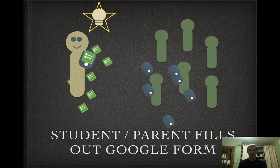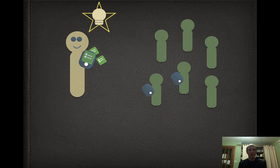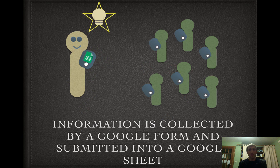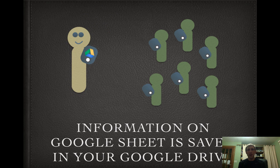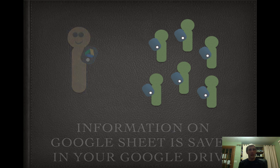Instantly, whatever it is — the student, parent, or one of your clients — they fill out that Google Form, it's all collected and sent back to the teacher. It's collected by that Google Form and then submitted and created into a Google Sheet, just a spreadsheet. It's very easy to sort and very simplistic to use. That information on the Google Sheet is saved in your Google Drive.